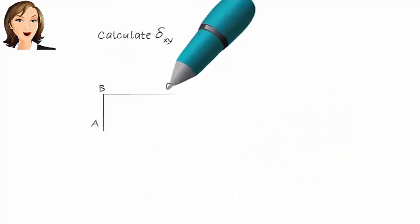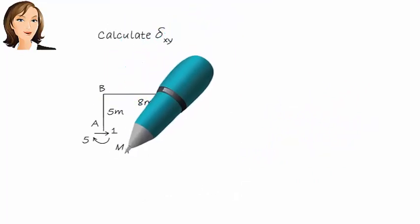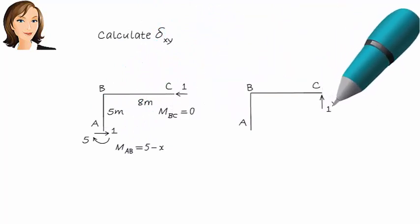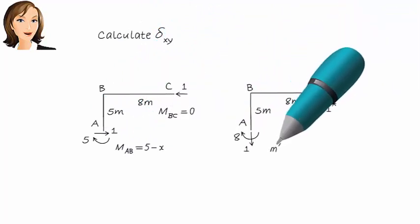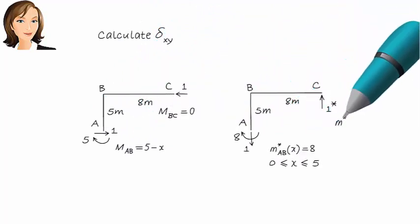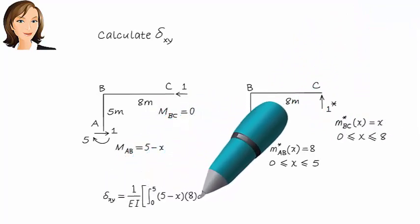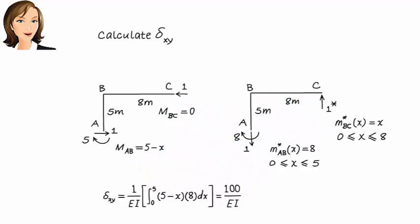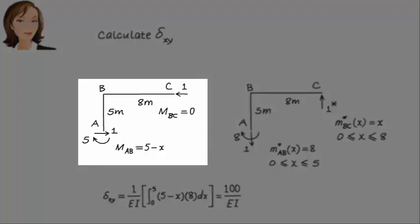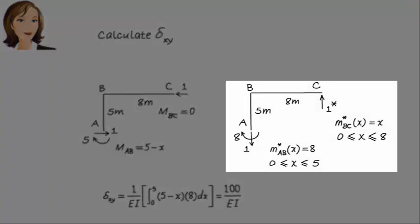Next, we need to get delta xy. This is horizontal displacement at C due to a vertical unit load at C. In this case, M and M star are not the same since the real load and the virtual load are in different directions. Here are M equations. Here are M star equations.